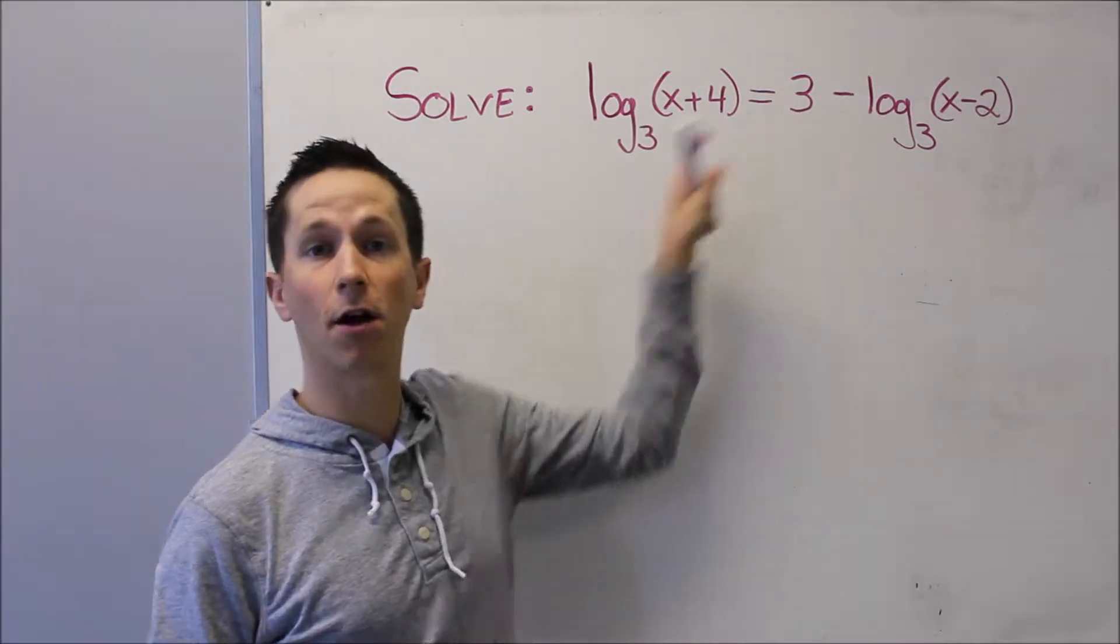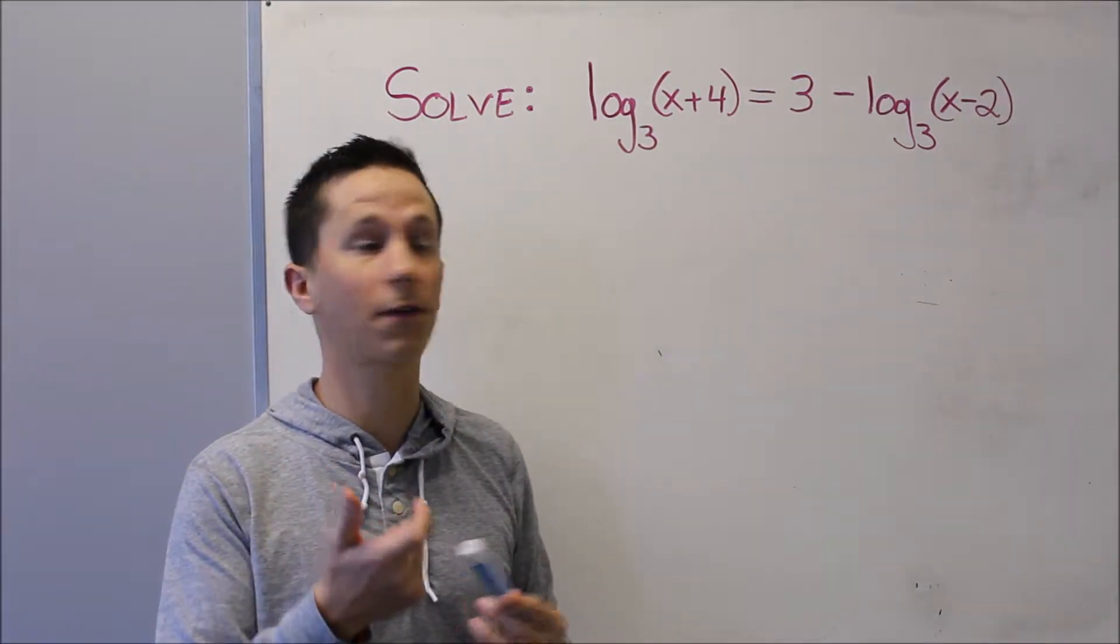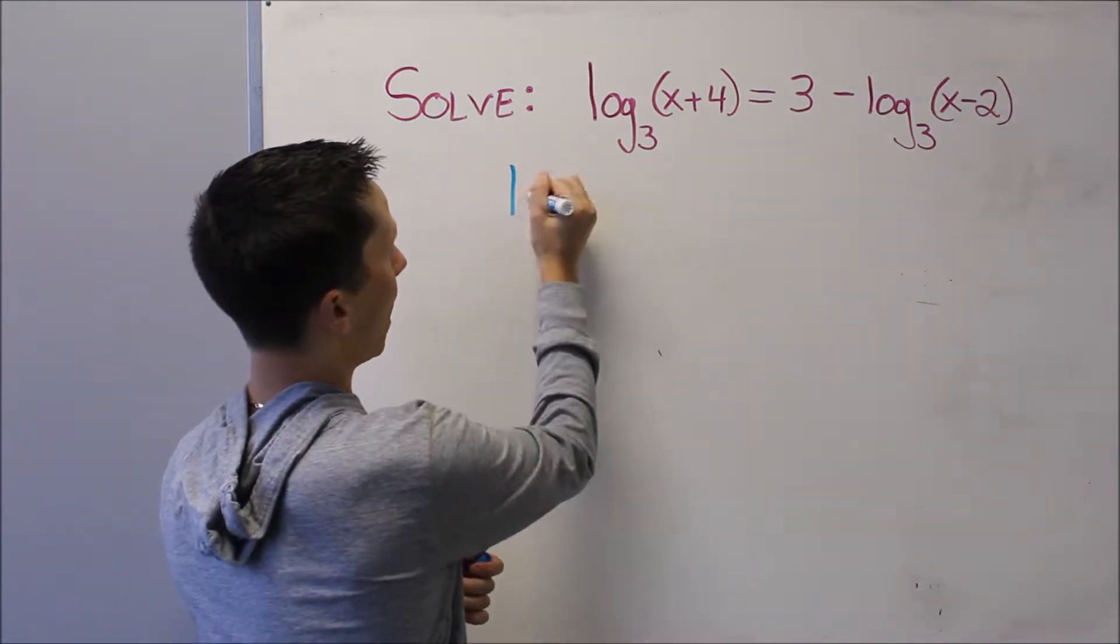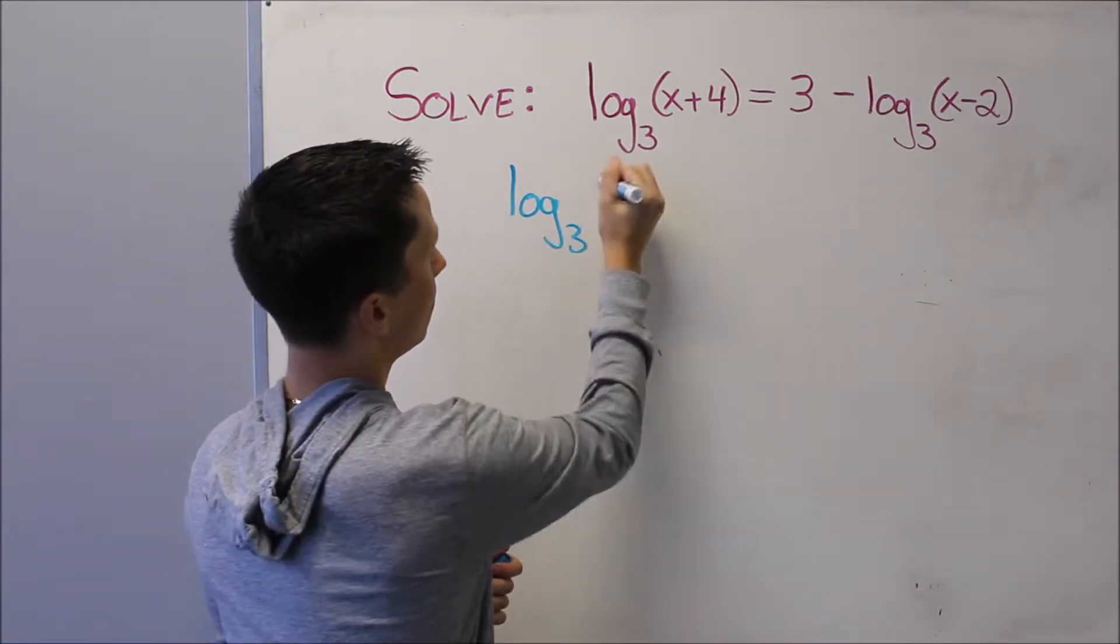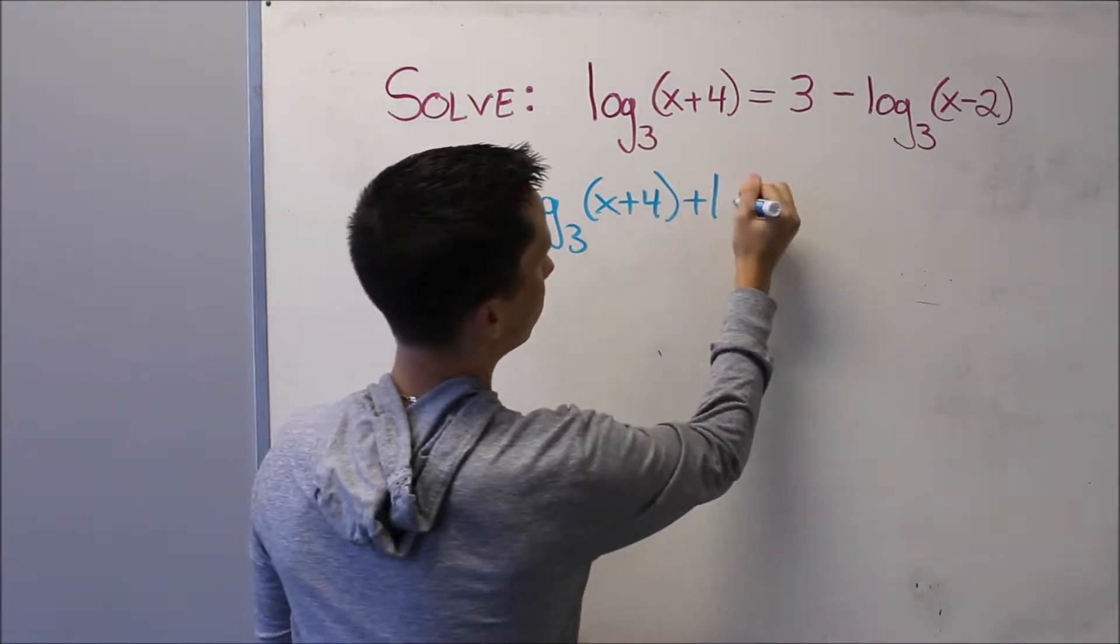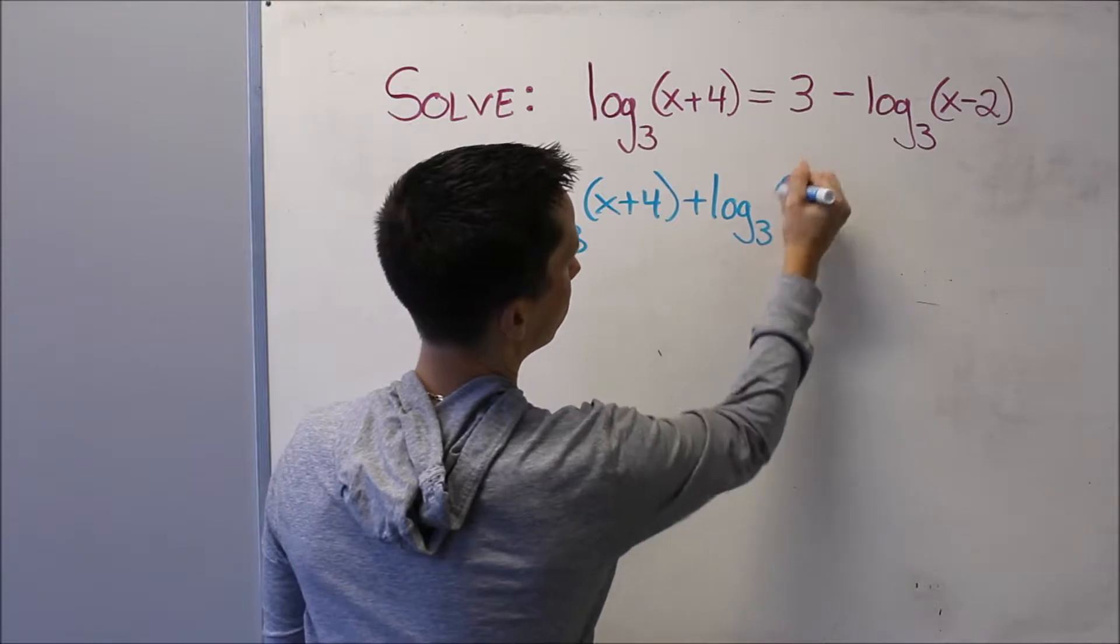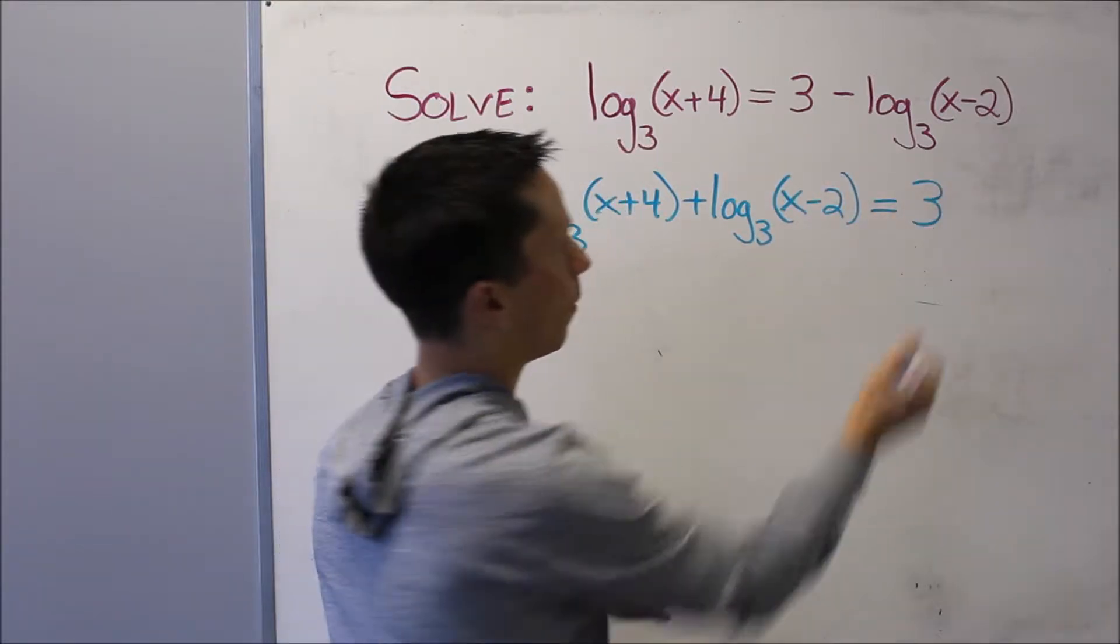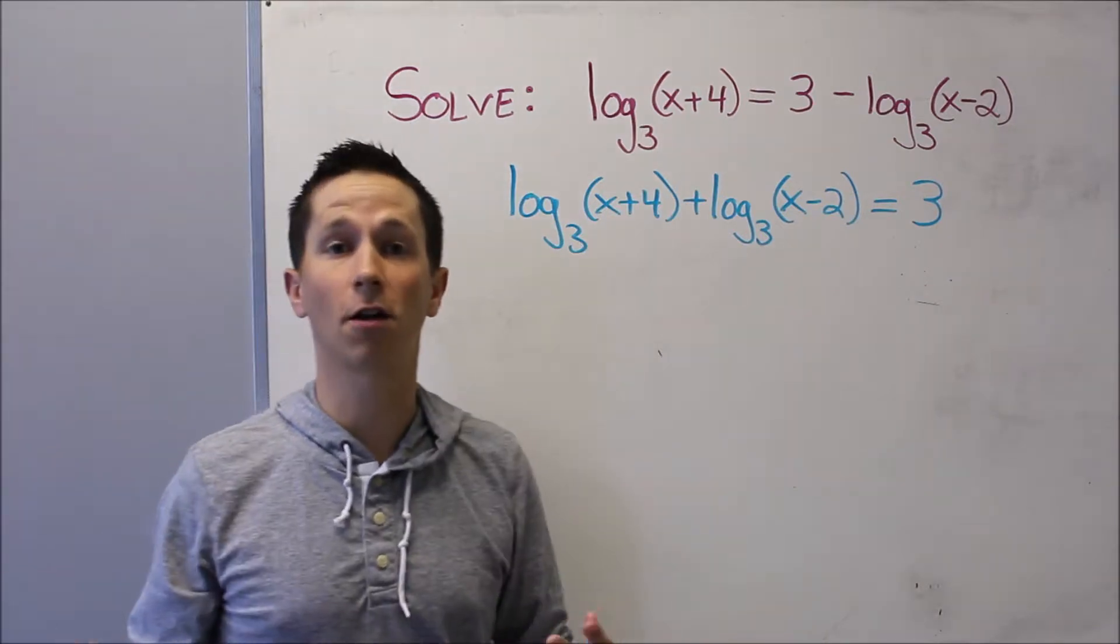So I've got to bring this logarithm over to this side, especially since they both share the same base, they're both base 3. So I'm going to simply add it to the left side, and I want to keep 3 over there because that's not in logarithmic form.